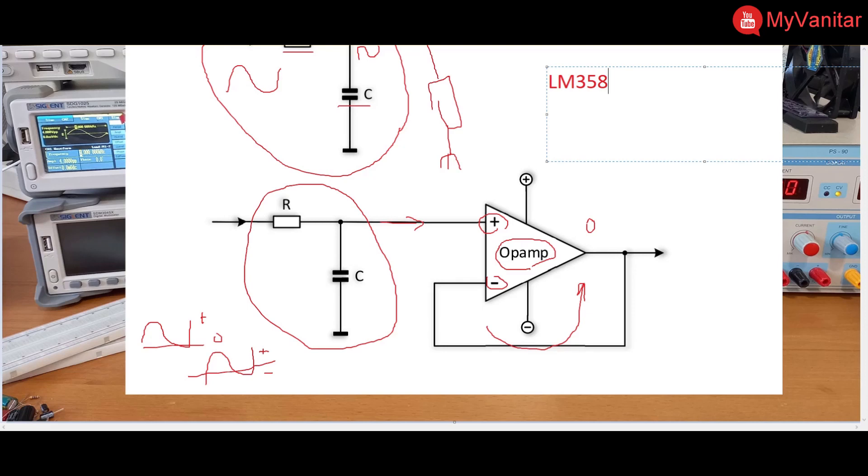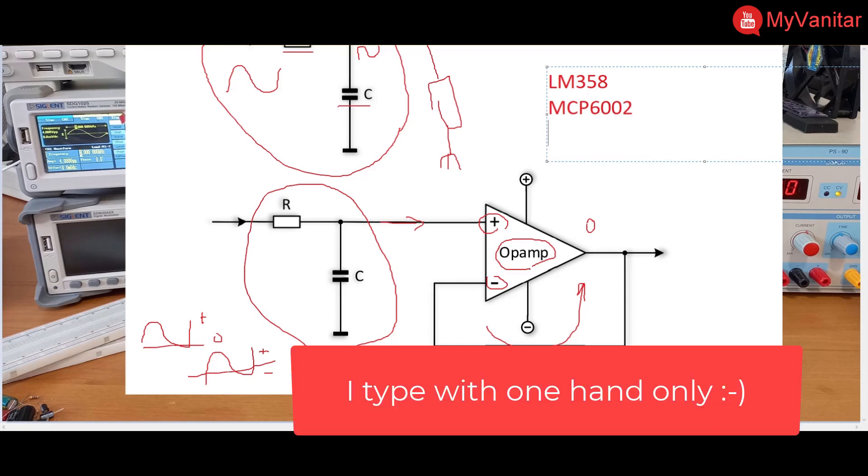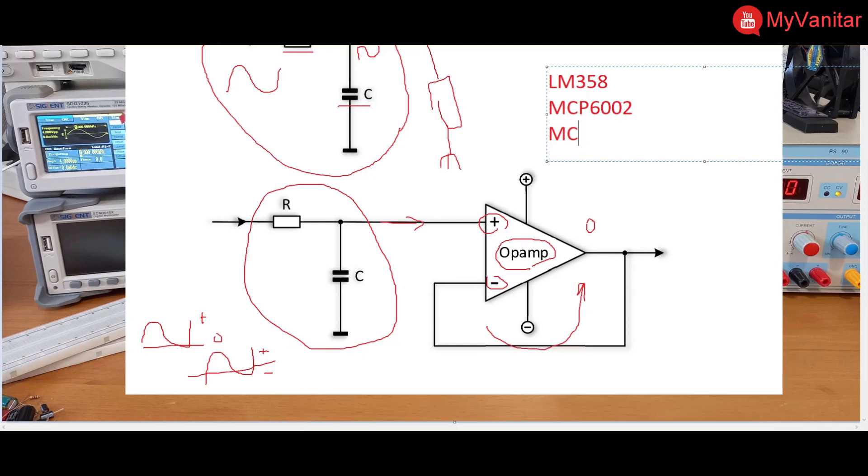So you can use a rail-to-rail op-amp such as MCP6002 or MCP602.